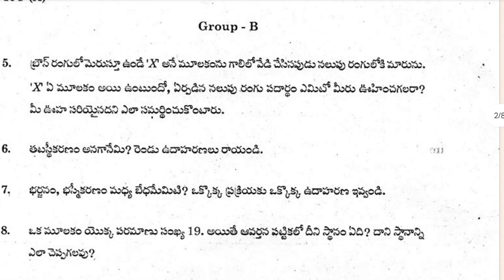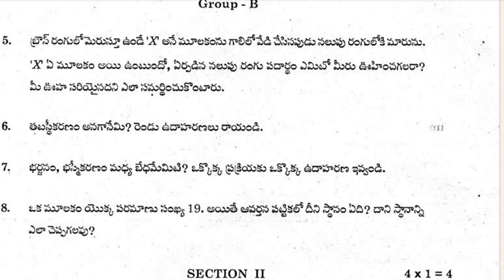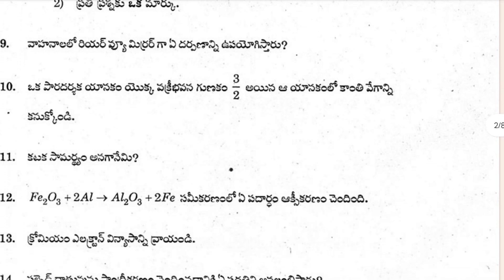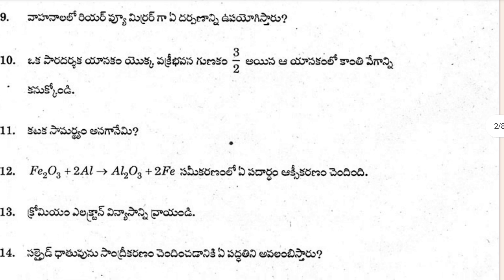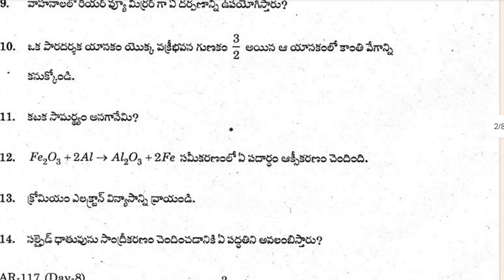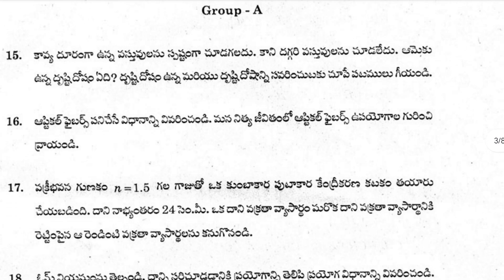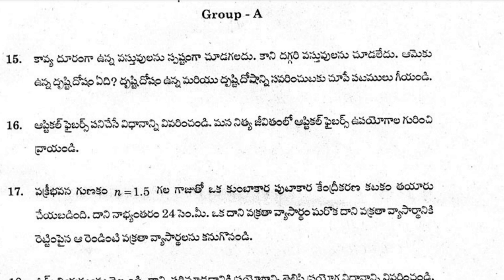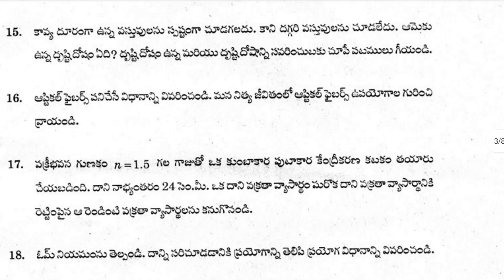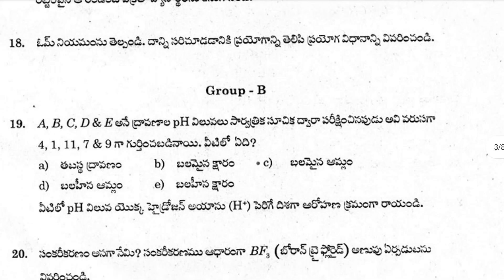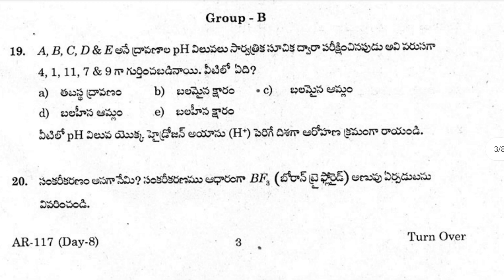This is Group B, and in Group B the questions are from five onwards. In Section Two, the questions are from nine to fourteen. In Section Three, that's Group One, the questions are from fifteen to seventeen. After that, question eighteen is here, and in Group B it is questions nineteen and twenty.